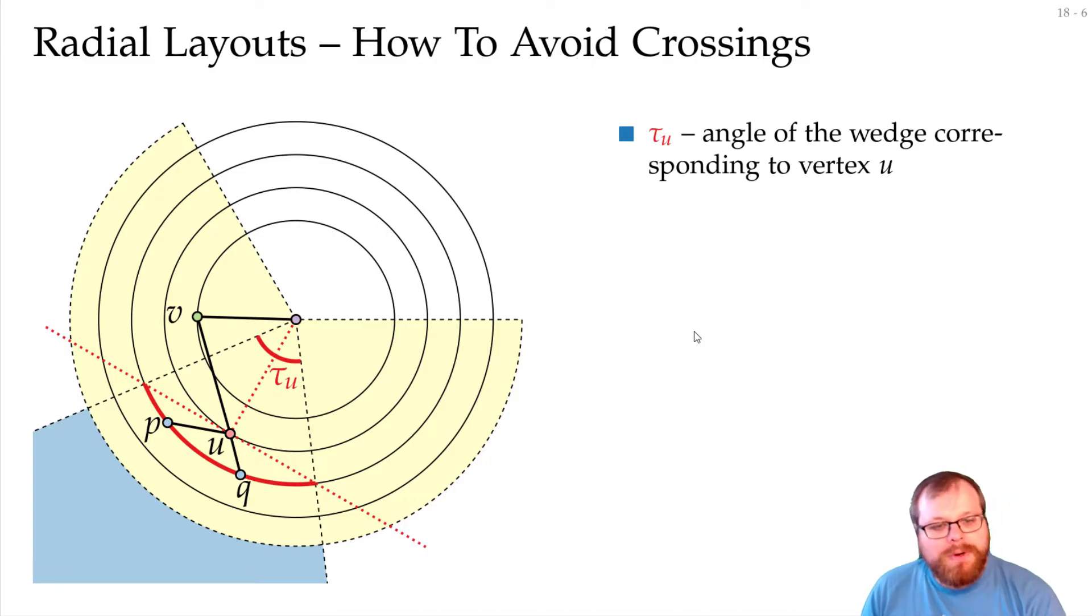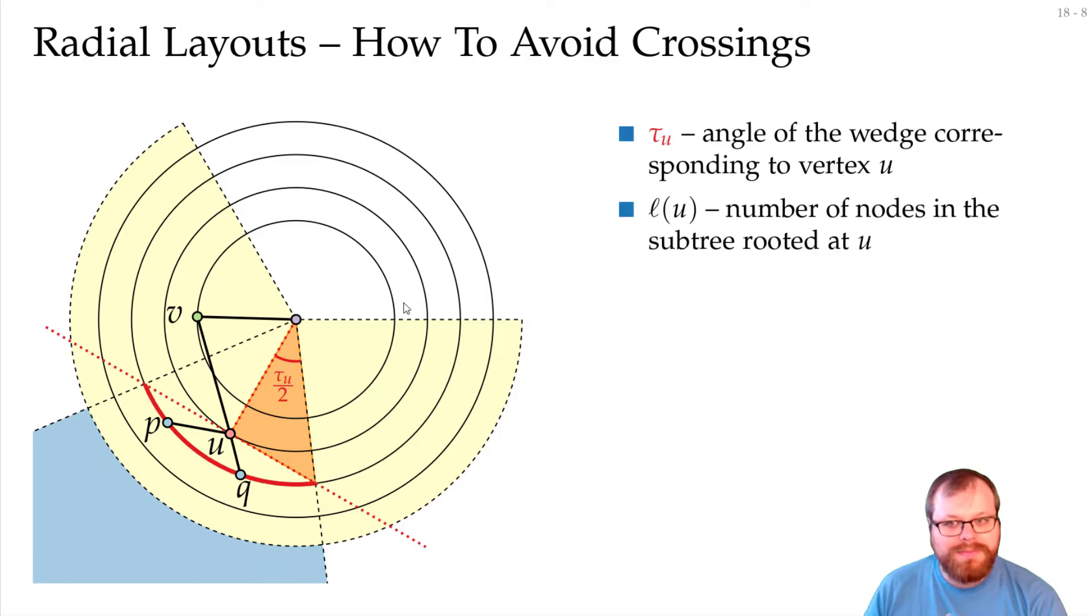We want to formalize this a little bit. So let's say tau of u is the angle that we get from this wedge that corresponds to u. If we take half of this angle, we get this triangle here. So the number of nodes in the subtree rooted at u is ℓ of u. That's what we defined earlier. And let's say that the radius of layer i is rho i. So this here has radius rho i, this is radius rho i plus one, and so on.